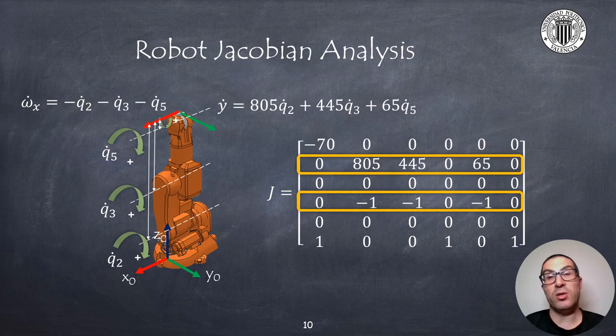This is quite obvious because the rotation in q₂ will imply a higher linear displacement of the end effector compared to the same rotation in q₅ due to the distance between the axis of the joint and the end effector.